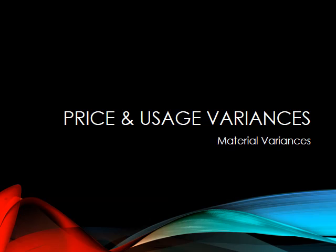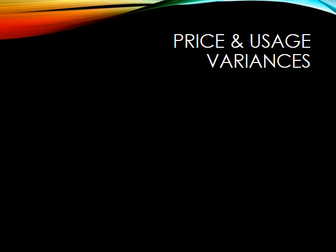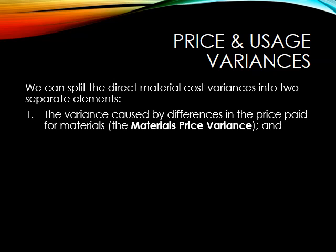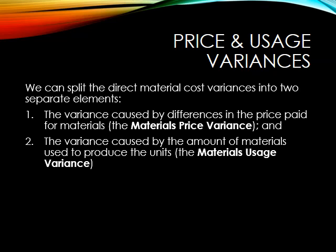We're now going to look at materials price variances and materials usage variances. When we look at that material cost variance, we can split it into two parts. First, we can look at the variance caused by a business paying different amounts per quantity of material — this is called the materials price variance. We can also calculate the variance caused by the quantity of materials used to produce the units, known as the materials usage variance.